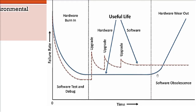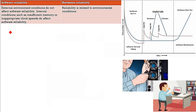Software reliability goes on and on — there is no wear and tear in software until another software replaces it. This is the period when software becomes obsolete. In software reliability, external and environmental conditions are not effective. Only internal conditions matter: bugs, defects, insufficient memory, inappropriate clock speeds — these affect software reliability. The main thing is how much testing you have done, how many bugs you have removed, and how stable your system is.